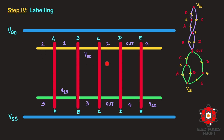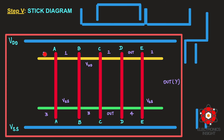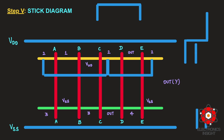Now that labeling is complete, we connect all common nodal terminals. Starting with node 1 in the pull-up network — there is no parallel node 1 elsewhere, so we leave it for now. Moving to node 2: there are multiple node 2 labels present, so we join all of them together. Then we connect VDD to the VDD rail already fixed. The output connection will be joined after completing the pull-down network connections.